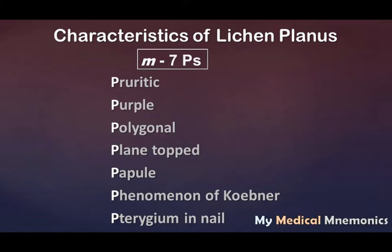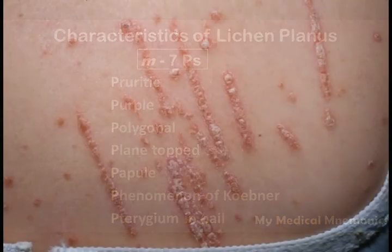The third P is polygonal — the shape of the lesions in lichen planus are polygonal. The fourth P is plain top, and the fifth P is papular. Papules are elevated skin lesions, and the top of the papules is plain or flat, giving them a plaque-like appearance.